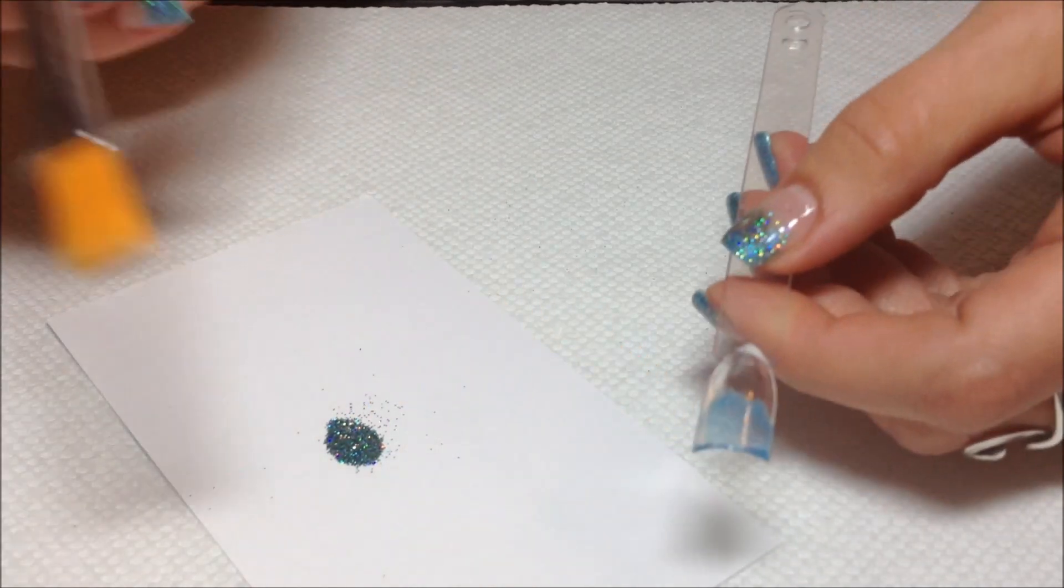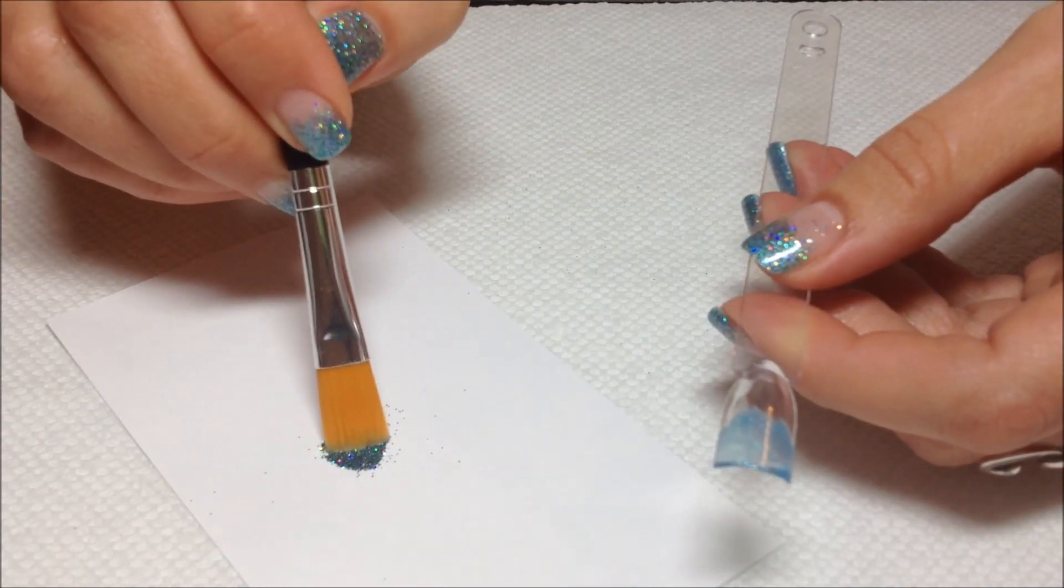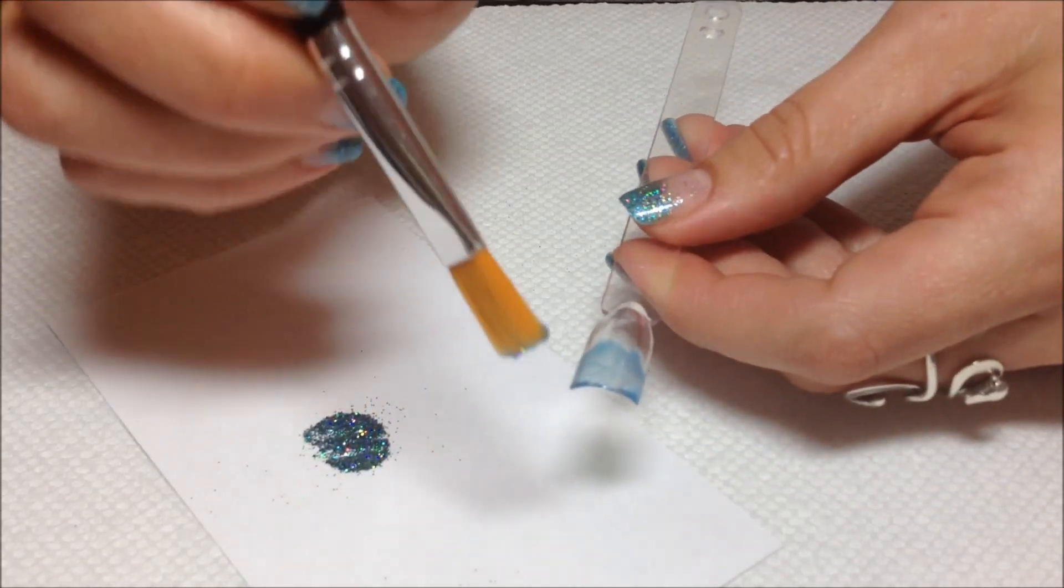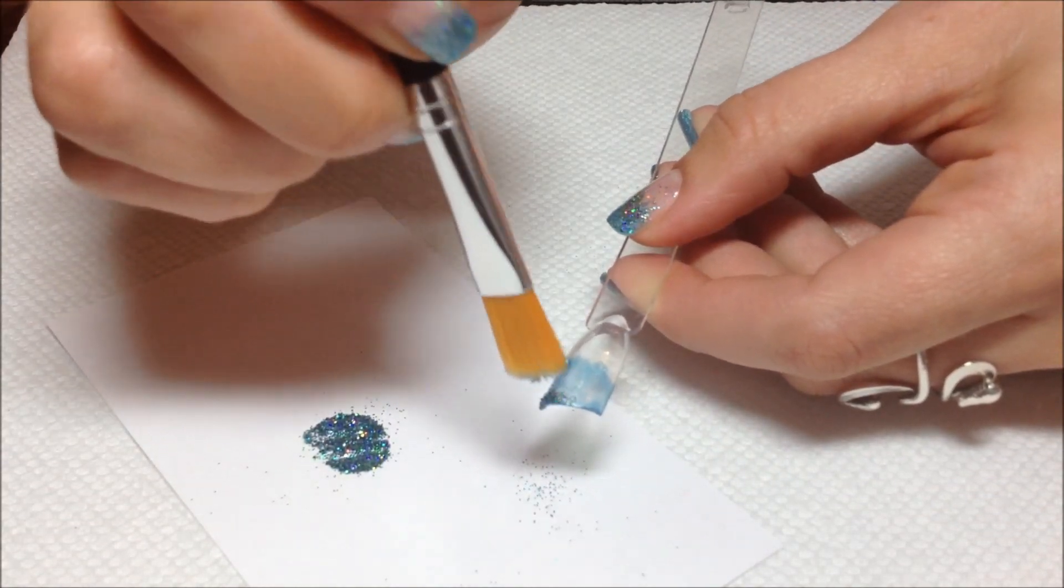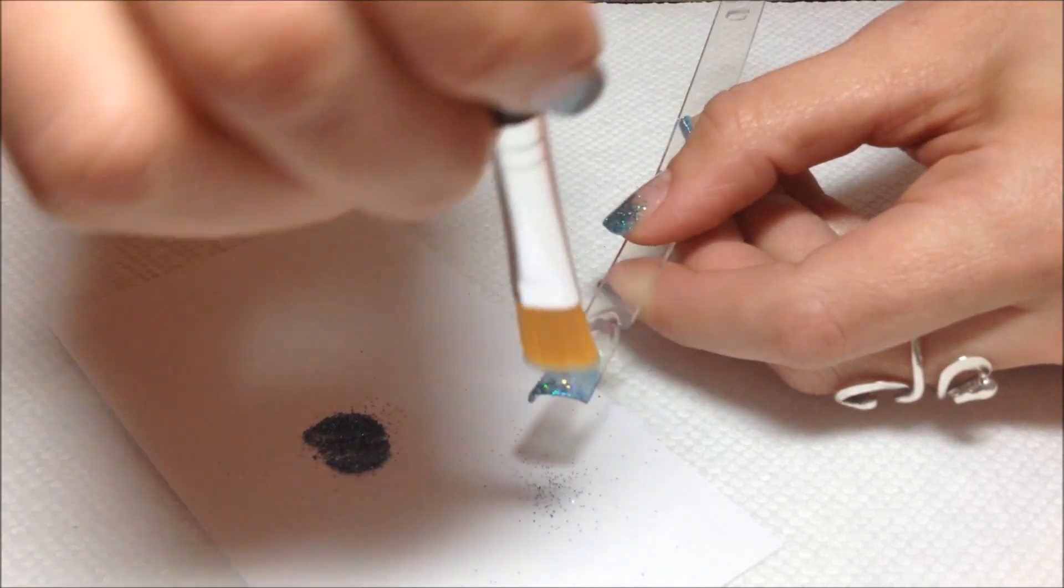So all I'm going to do is pick up some glitter on this brush and just tap it onto the tip of the nail.